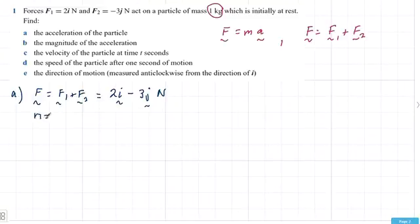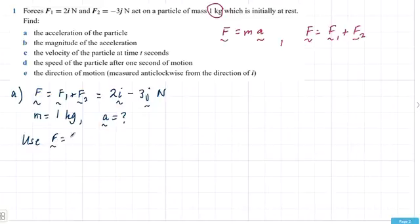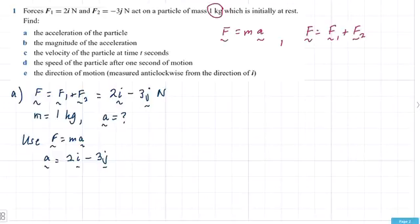We know our mass is equal to 1 kilo, and we don't know the acceleration — but the question is asking us to find it. Using F equals MA, acceleration times 1 equals the force, and because we don't need to care about that times 1, your acceleration is 2i minus 3j.